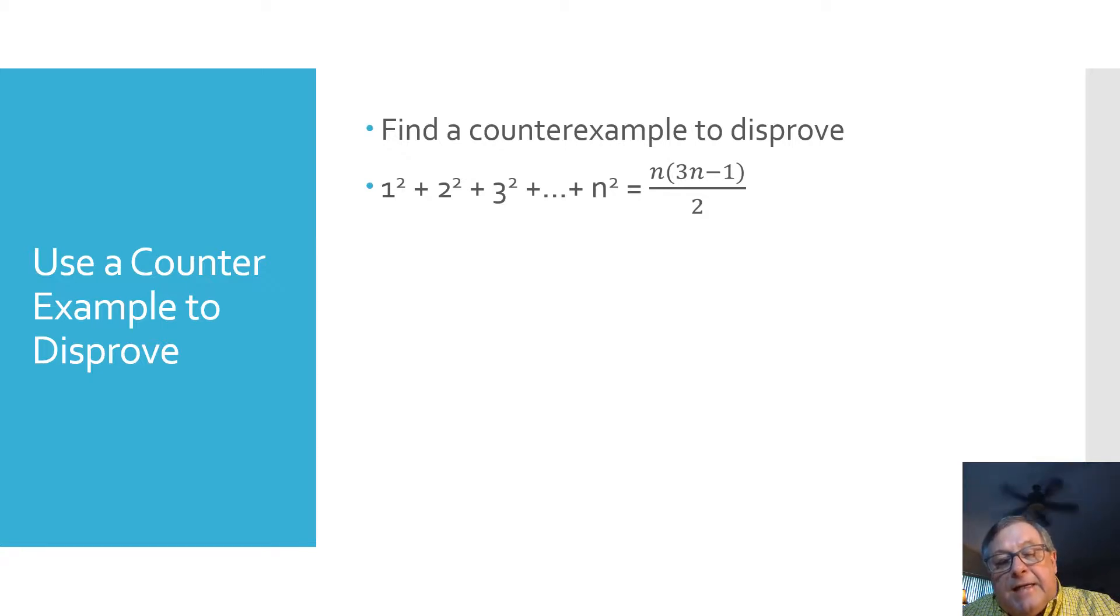So let's attack this. The first number in the sequence is one squared, and of course, one squared is equal to one. So first, I'm going to substitute one for n into this equation and see what that yields us and to see if that gives us something that is, in fact, equal to one. We've got one times three times one minus one over two.